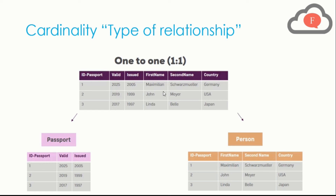So when we want to make a relationship between these two tables, it is a very specific cardinality which is one-to-one. In the passport table, Passport ID is specific and unique to each row. In the person table, Passport ID is also specific and unique to each row. When we create a relationship between these two tables, it is called a one-to-one relationship, or one-to-one cardinality.